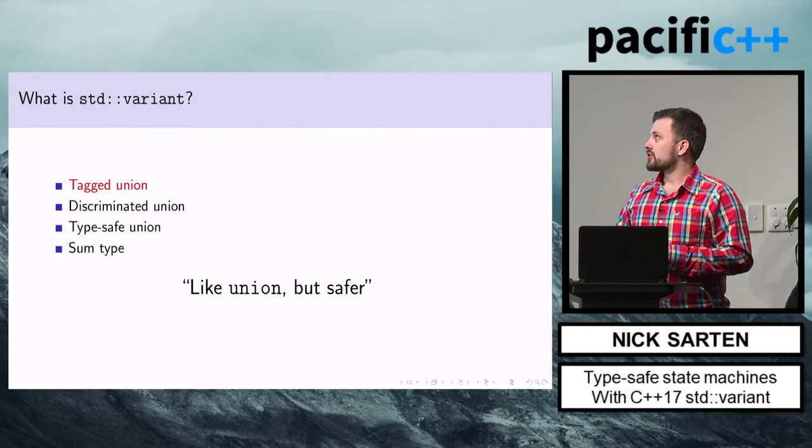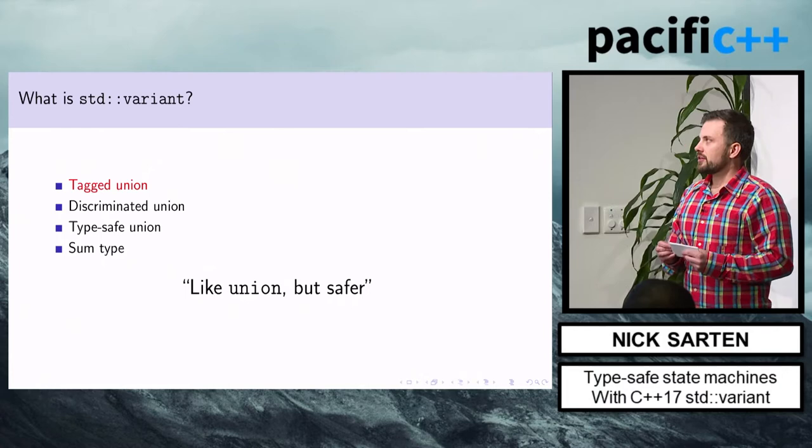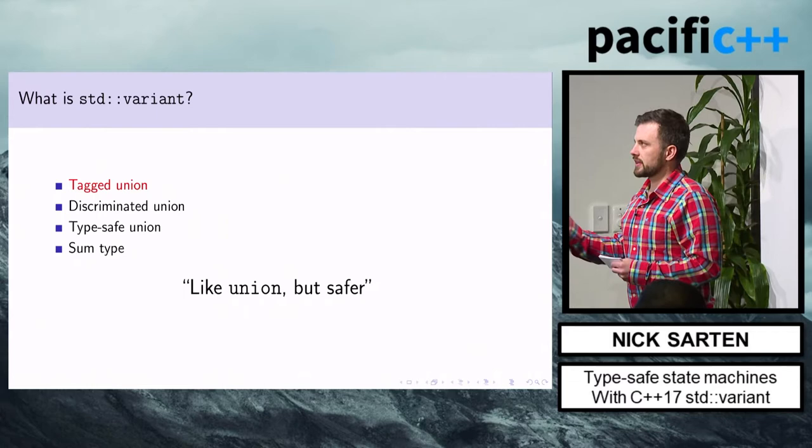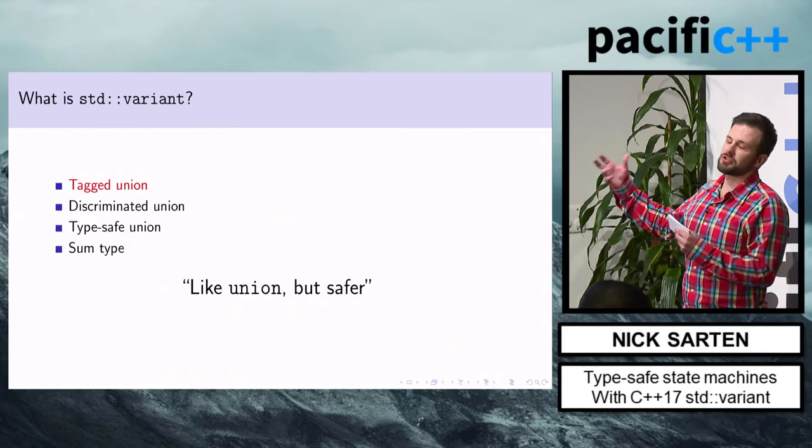What is std::variant at a high level? The concept goes by quite a few names online — "tagged union" is the most searchable term. Many other languages have similar concepts but call them different things. Also known as "type-safe union" or "discriminated union." If you're looking for the implementation, std::variant is the thing to search for.